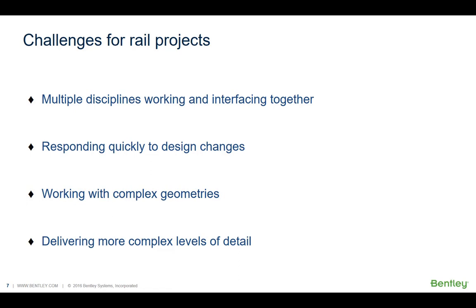In this session, we are going to look at addressing some of the challenges we have in rail design, and where technology can help overcome those challenges. Multiple disciplines working together is always a challenge, especially when there are different applications with different file formats in play. We will look at how we can respond quickly to design changes — so when the rail engineer changes the rail alignment, how that can respond through to the downstream MEP and structural applications. We will also look at working with complex geometries, and delivering more complex levels of detail required in typical rail and infrastructure projects.